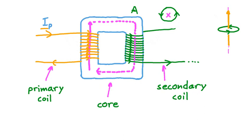In order for a transformer to work properly, the current in the primary coil must be alternating current — AC. When that's the case, it means that the magnetic field lines in the core are constantly changing in magnitude. And when that's happening, every single one of the windings in the secondary coil is always seeing a different magnetic field move through it — there's a constant changing magnetic field through the windings of the secondary coil. Therefore, we will constantly induce voltage and current in that coil. For a transformer, it's very important to work on alternating current.